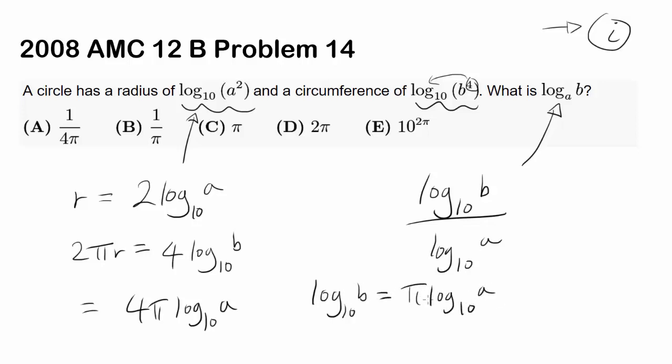And dividing both sides by log base 10 of A gets you this ratio log base 10 of B to log base 10 of A, which is equal to pi. So our answer is C.